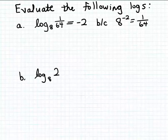Why is it that 8 raised to the minus 2 power is 1/64? Because 8 raised to the minus 2 power simplifies as 1 over 8 squared, and 8 squared is 64.